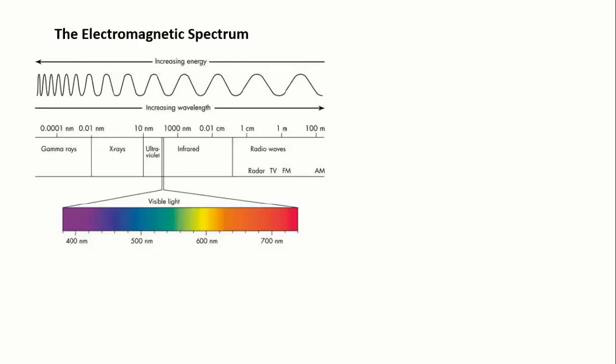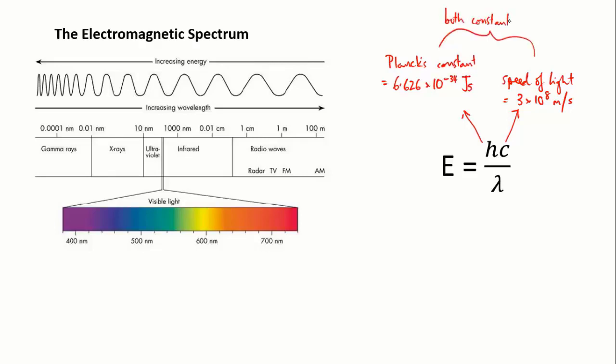The equation that gives you this information is E equals HC over lambda. C is the speed of light, which is constant, as we mentioned before. And H is called Planck's constant, which has a value of 6.626 times 10 to the minus 34 joule seconds. You do need to know that Planck's constant is a phenomenally important constant in physics and chemistry, and if you go on to do more science at uni, you will be meeting it again.